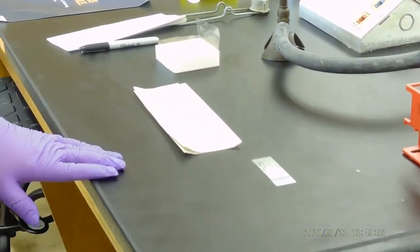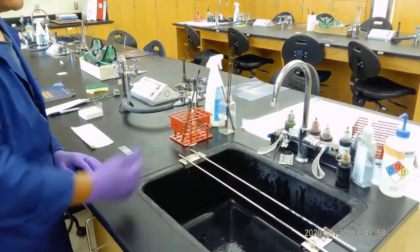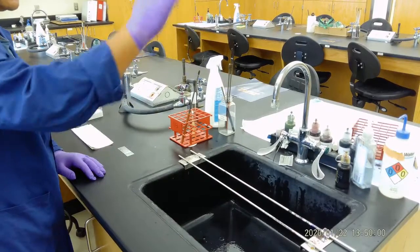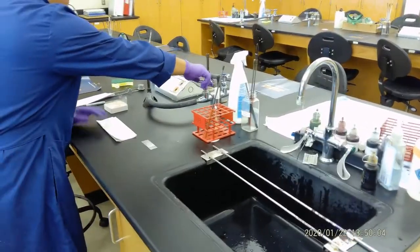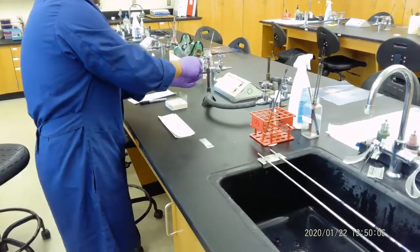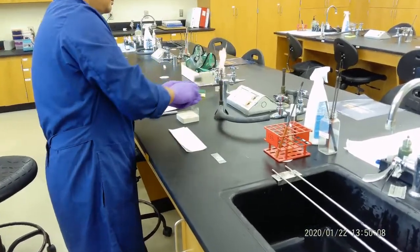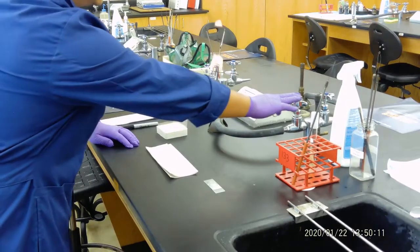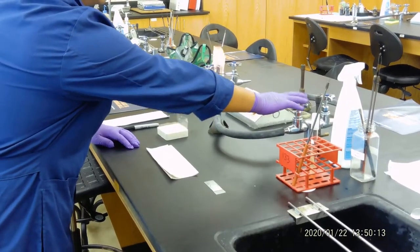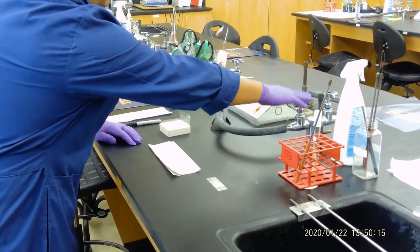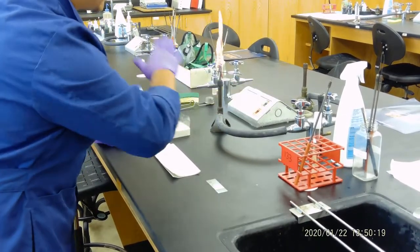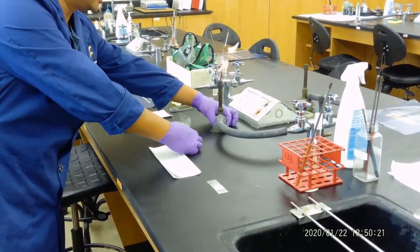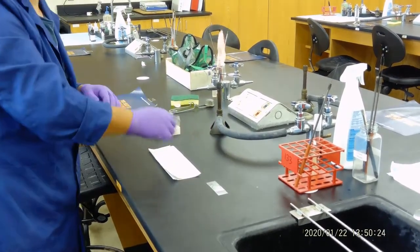Before we do this, water needs to be turned on a little bit. Let it be running very slow, not flushing. And then we turn on the Bunsen burner. You will see there is a switch which is for the control of the gas coming, and also the switch at the bottom, which is for the amount of the fire.